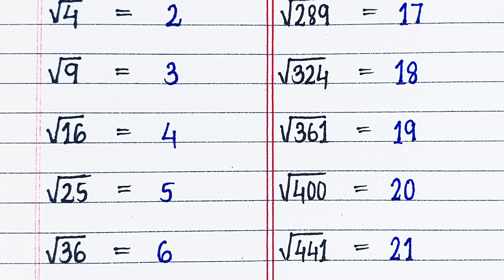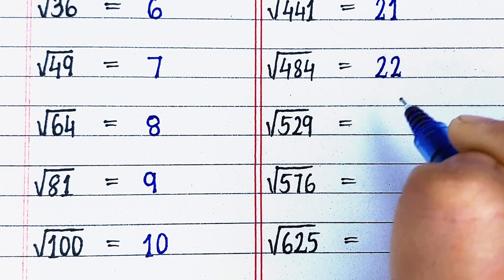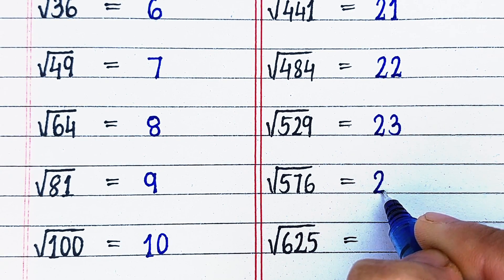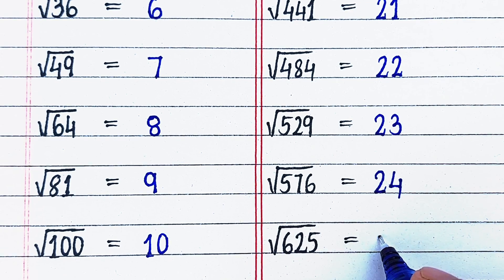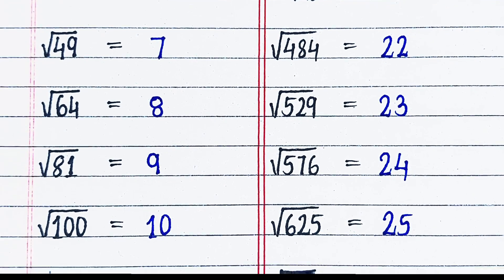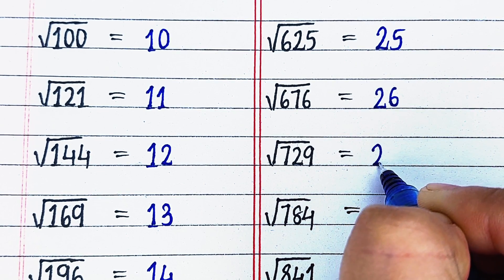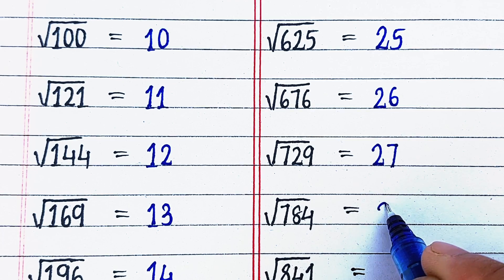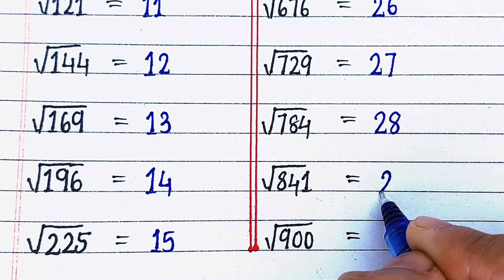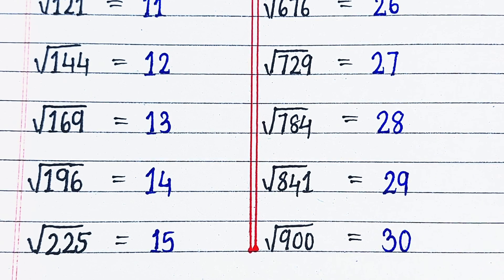Square root of 441 is 21. Square root of 484 is 22. Square root of 529 is 23. Square root of 576 is 24. Square root of 625 is 25. Square root of 676 is 26. Square root of 729 is 27. Square root of 784 is 28. Square root of 841 is 29. Square root of 900 is 30.